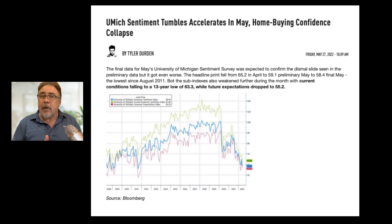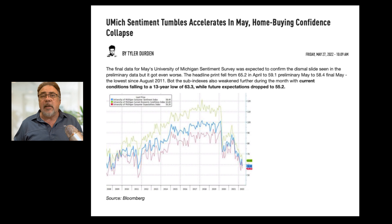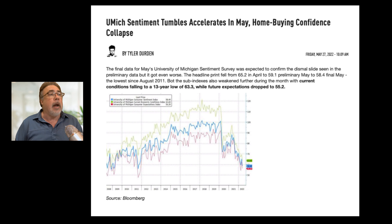As this comes as no surprise, the University of Michigan sentiment tumbled and accelerated in May — home buying confidence collapsed. Current conditions are falling to a 13-year low, with future expectations expected to drop even further. The lowest since August 2011 as far as home buyer confidence, which basically means the market's dismal. Inventory, price points, stress, interest rates, mortgage rates — you can see that blue line is tanking.